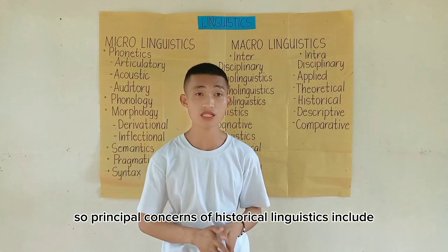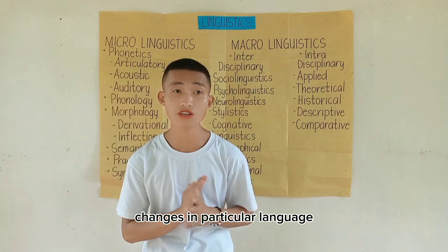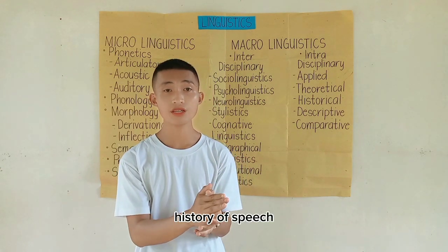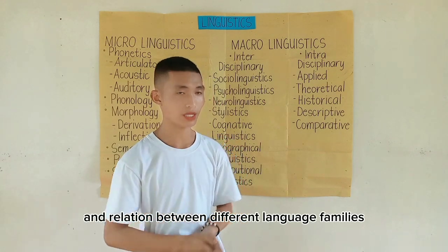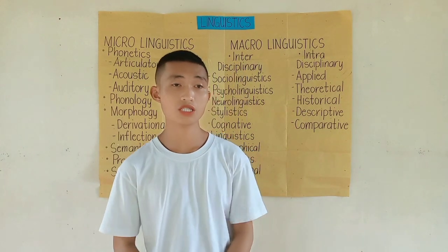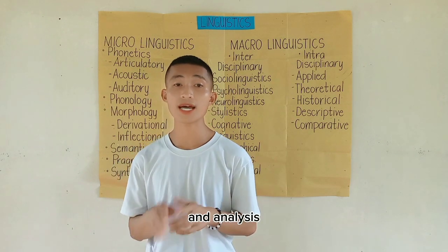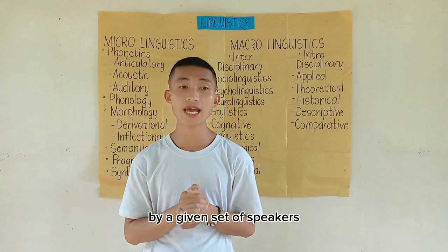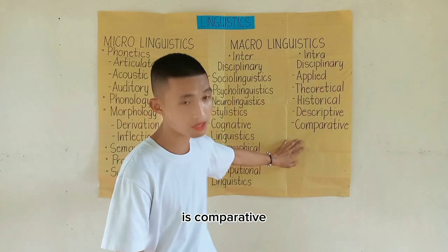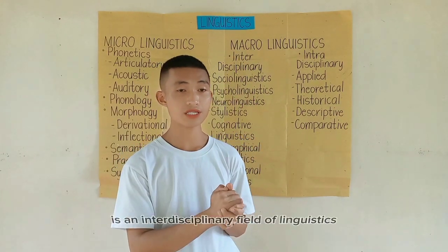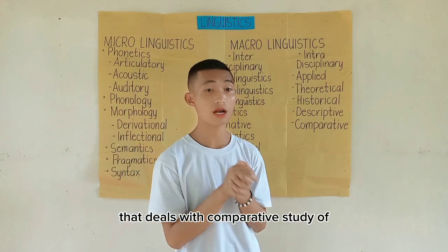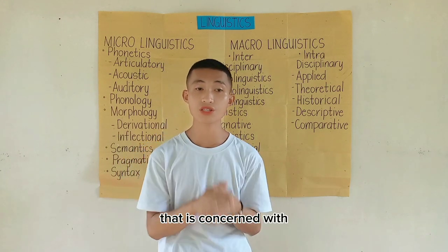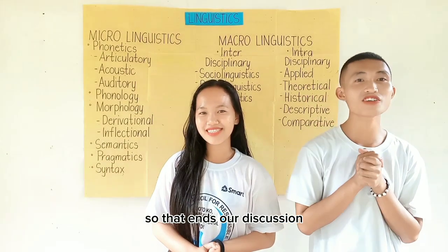Principal concerns of historical linguistics include how and why language changes, changes in particular languages, history of words, etymology, history of speech communities, and relations between different language families. Descriptive linguistics is concerned with the description and analysis of the ways a language operates and is used by a given set of speakers at a given time. Comparative linguistics is an interdisciplinary field dealing with the comparative study of different languages and is a sub-branch of historical linguistics.